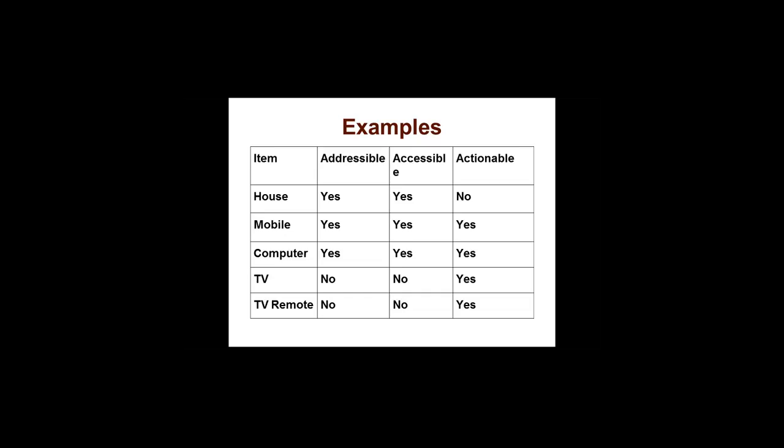A TV is not addressable — it does not have an address. IoT would give it a URL. It is not accessible from outside, but it is actionable — a remote can make the TV act locally. A TV remote is not addressable, but when IoT comes, your remote will also have a specific URL address and can be accessed and acted upon. So the idea is this: IoT would like to make the entire world addressable, accessible, and actionable. The fixed internet connected 1 billion people; mobile connected another 2 billion. IoT is expected to connect 28 billion things — not just people, but everything including a bracelet on your hand or a car parked in your lot.